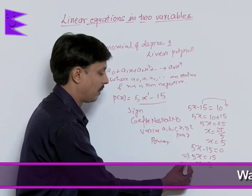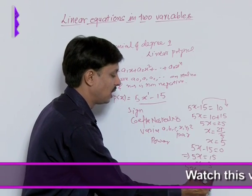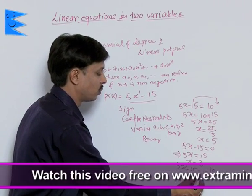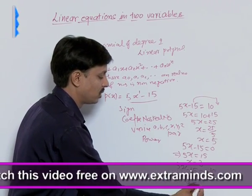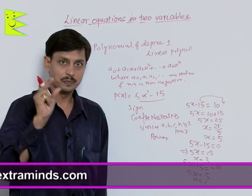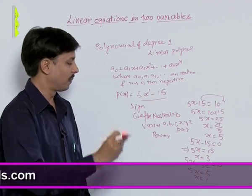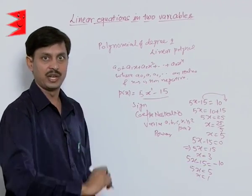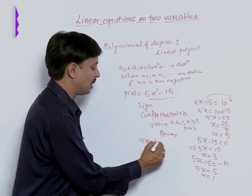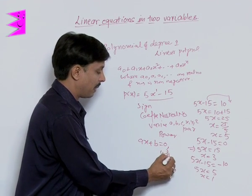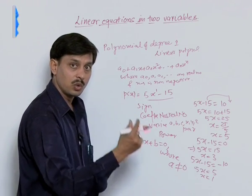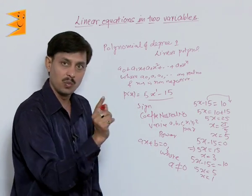You can equate this 5x minus 15 as suppose minus 10, then the answer of 5x is what, 5, and x is what, 1. So ultimately what is the linear equation in two variable? Its standard form can be written like this: any linear equation of the form Ax plus B is equal to 0, where mandatory necessary condition is that A is not equal to 0, is known as the linear equation in one variable.